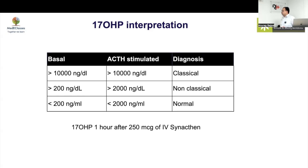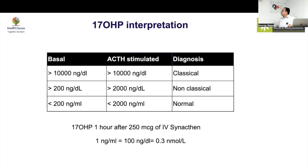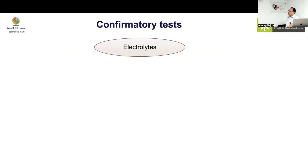The ACTH stimulation test is performed by giving synacthen 250 micrograms and then measuring 17-OHP after one hour. For unit conversion: 1 nanogram per mL equals 100 ng/dL, and the nanomole per liter conversion factor is 0.3. This is how you convert between the three units.